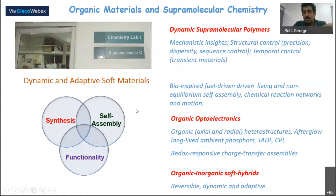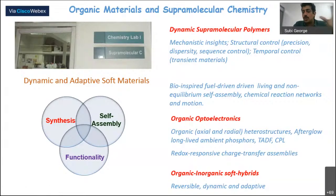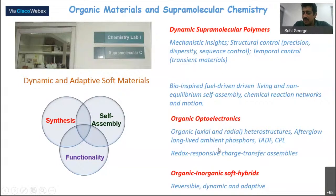Most of the time, one component in our material is a pi-conjugated molecule or system. We use our knowledge in supramolecular chemistry to influence molecular order and eventually the efficiency of devices. Today, however, I'll focus on dynamic supramolecular polymers — a field that has gained momentum in the last decade, though it started towards the end of the last century. It's viewed as an alternative to classical polymers, with the additional property of dynamic behavior.